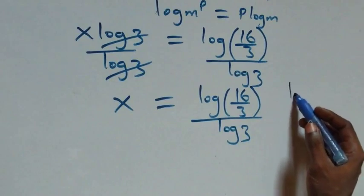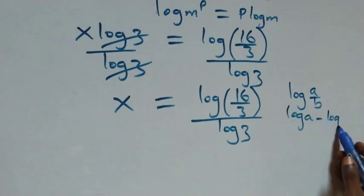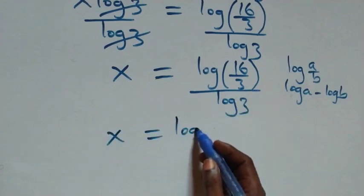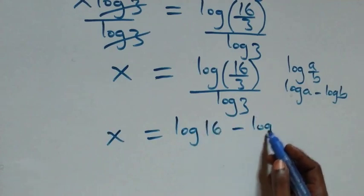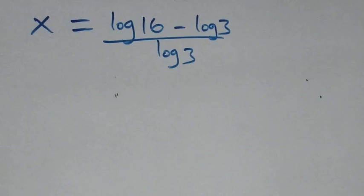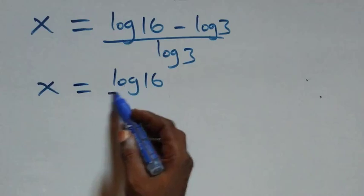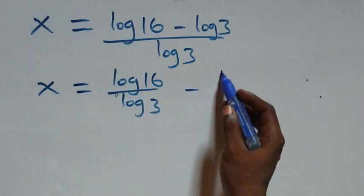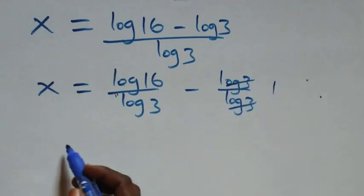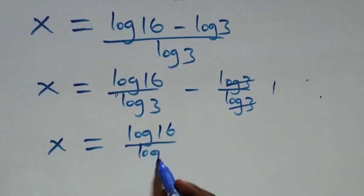This follows from the law of logarithms: when we have log of a over b, this can be written as log a minus log b. So here we have x equals log sixteen minus log three, all over log three. The log three terms cancel, giving us x equals log sixteen over log three minus one.